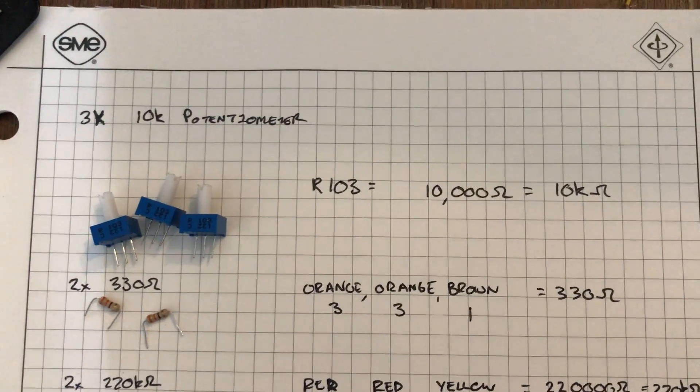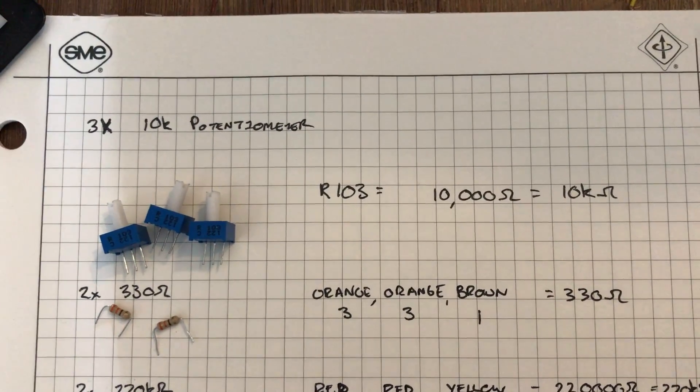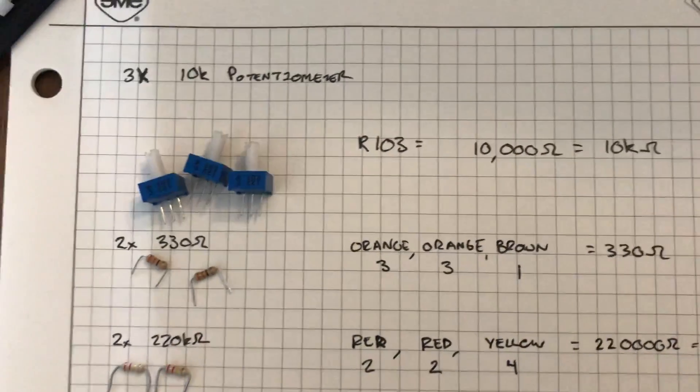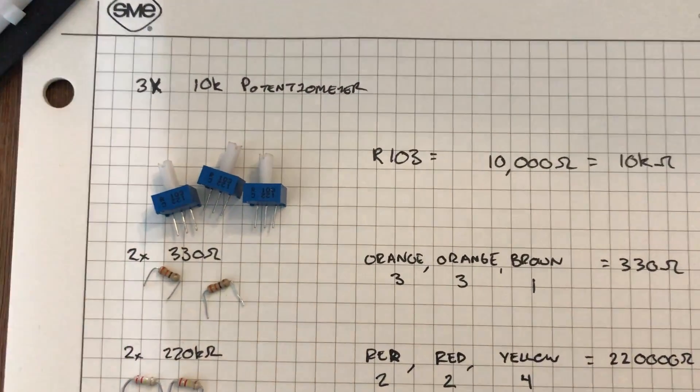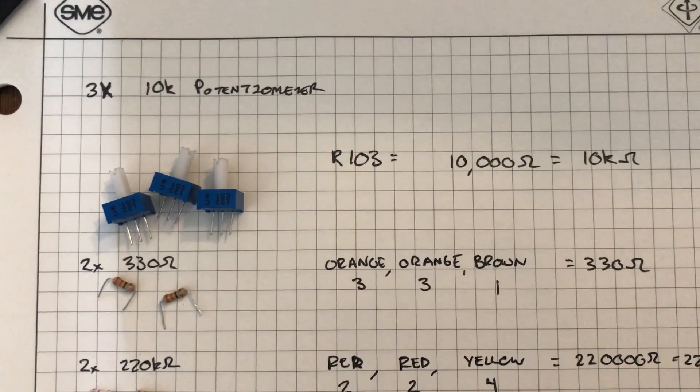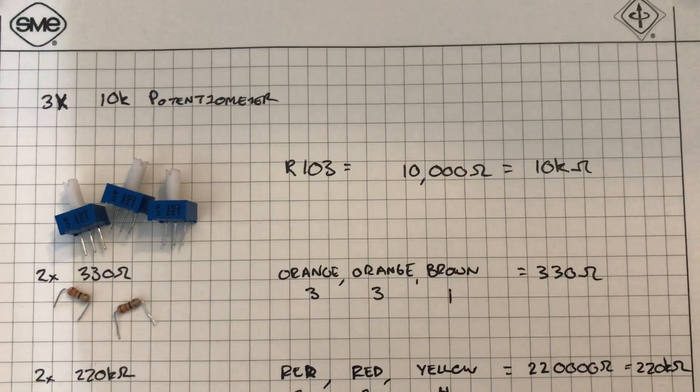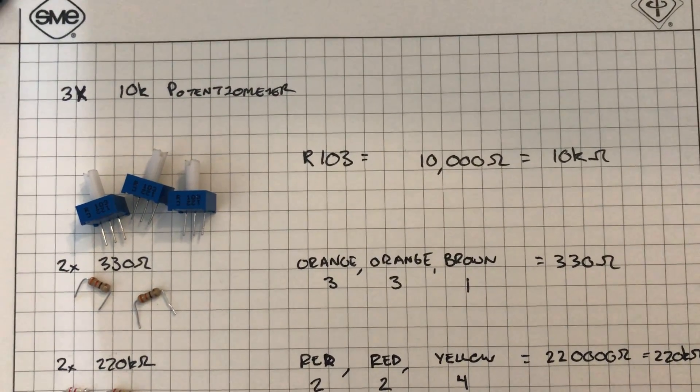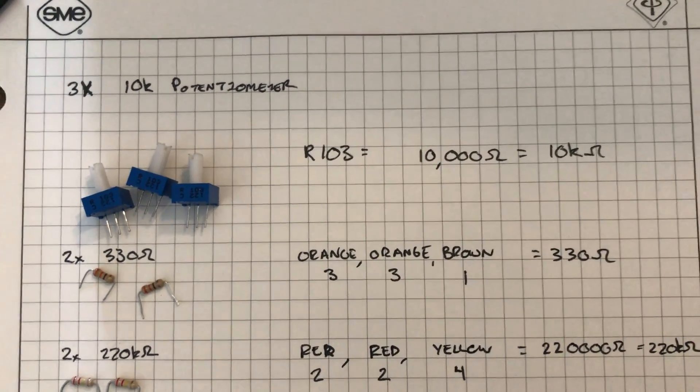You can see that I have three 10k potentiometers. It might be difficult to read from where you're at but the potentiometers are labeled with R103, and so what that means is a 10 followed by three zeros when you're looking at potentiometers, so that's 10k.